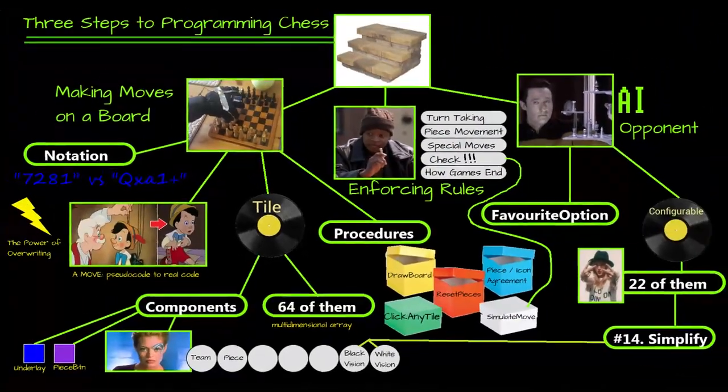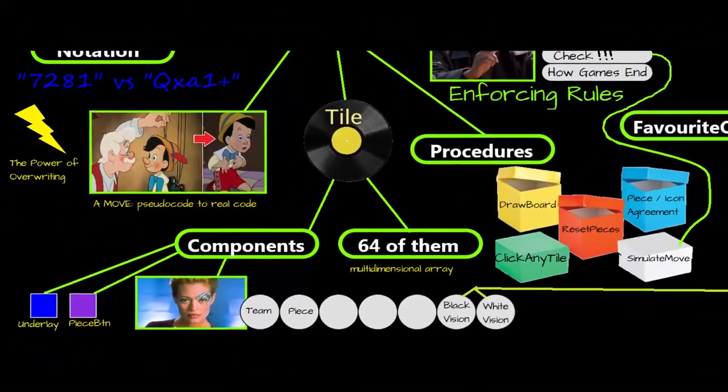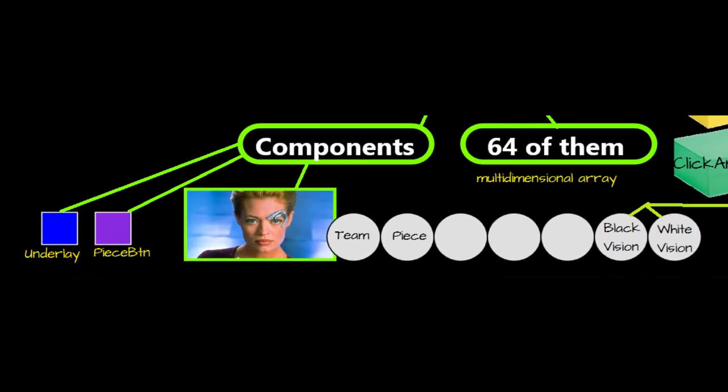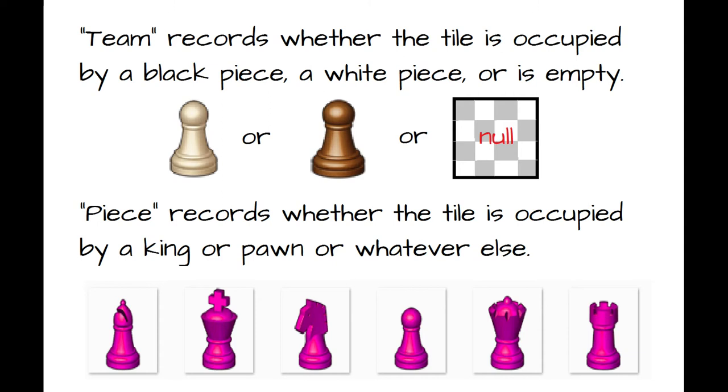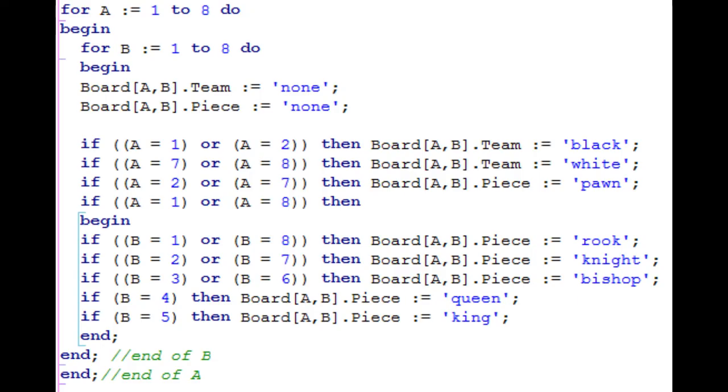Now remember a few minutes back when Jerry Ryan was on the screen, and I said that each of these tile records contained nine pieces of data, and seven of the nine were invisible units of information? The two most basic are the strings called Team and Piece. Team records whether the tile is occupied by a black piece, a white piece, or is empty. Piece records whether the tile is occupied by a king, or a pawn, or whatever else. Here is a piece of a procedure called Reset Pieces. Unlike Draw Board, which is called only when the game first boots up, Reset Pieces is called every time the user starts a fresh chess match. It gets the pieces to their starting positions. As you can see, it has the exact same double for loop structure as Draw Board. I even used the variable names A and B again, but I didn't have to. Let's read through this code.